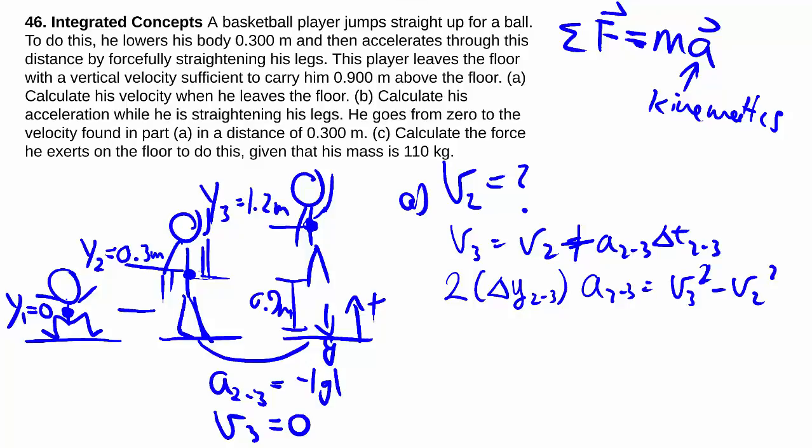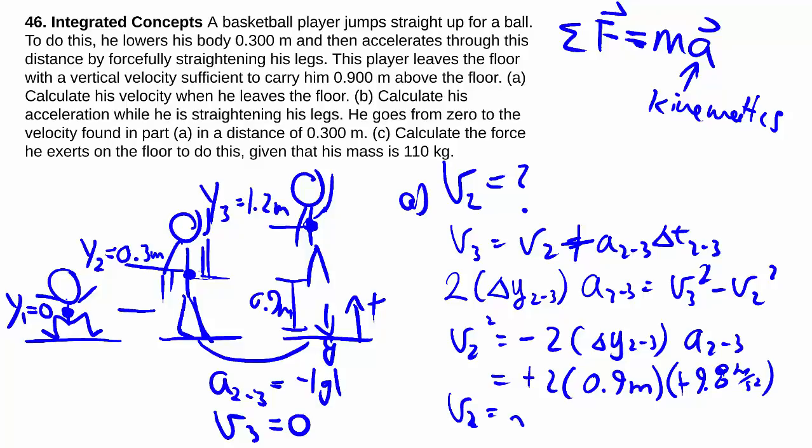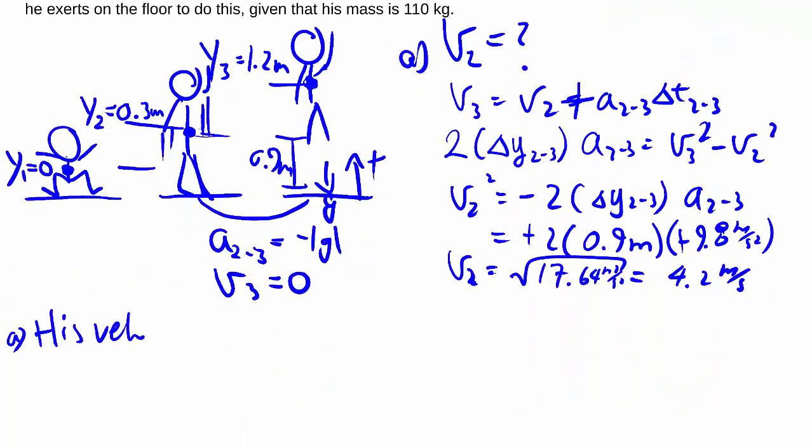So since v3 is 0, we know that v2 squared is negative 2 delta y2to3 times a2to3, and that's negative 2. The difference in heights between time 2 and time 3. You've gained 0.9 meters or 1.2 minus 0.3 meters. You have negative 9.8 meters per second squared for your acceleration because it's downward. These two kind of cancel out. And we can take the square root of whatever we get here to get our number, which is 4.2 meters per second. And his velocity when he leaves the floor is 4.2 meters per second upwards.